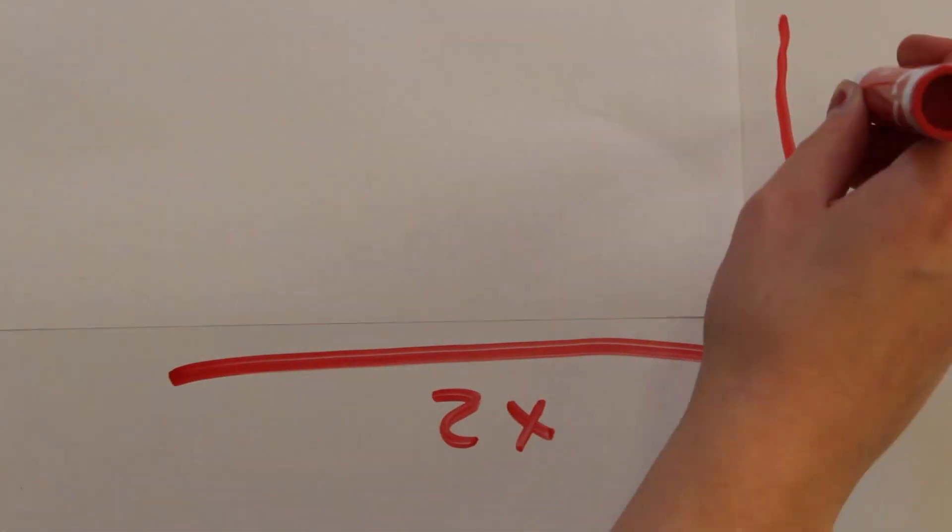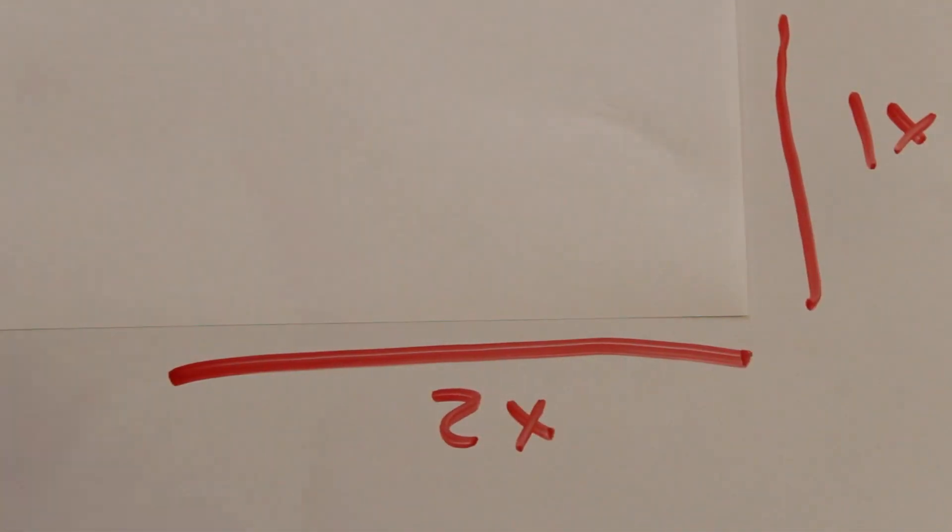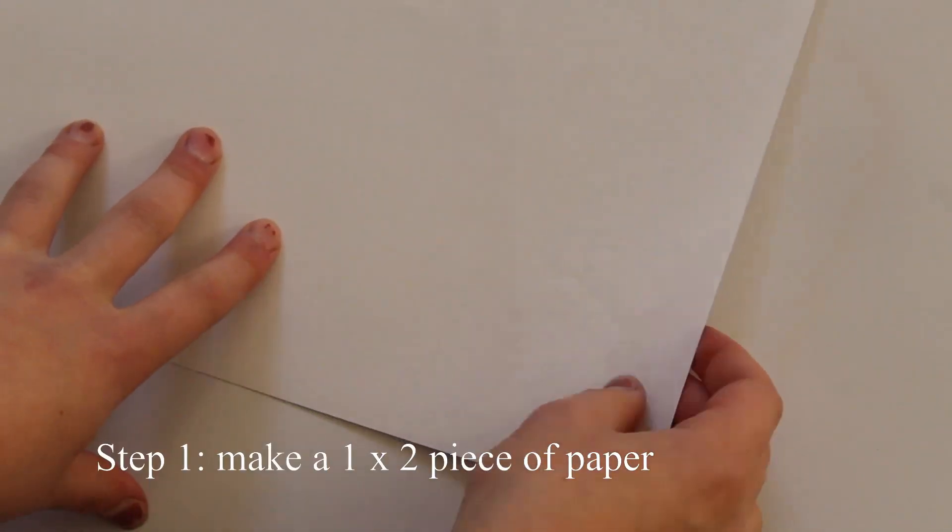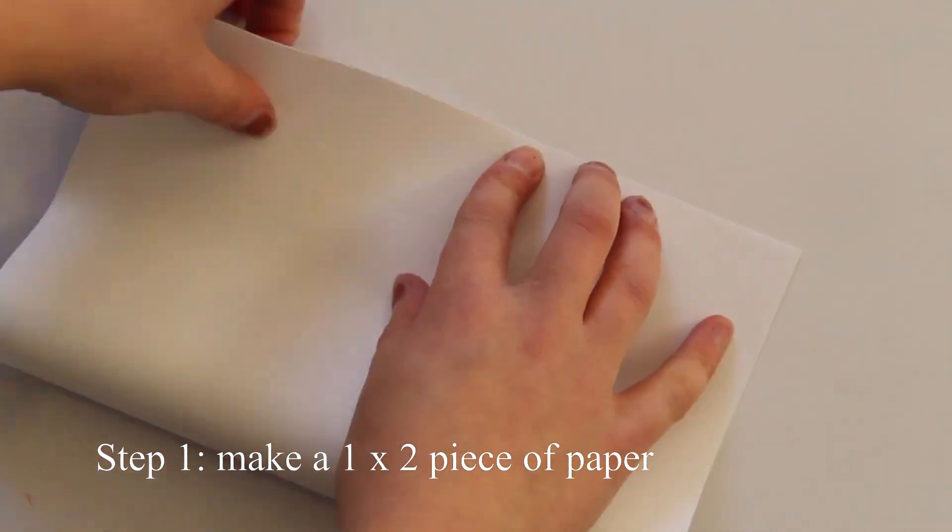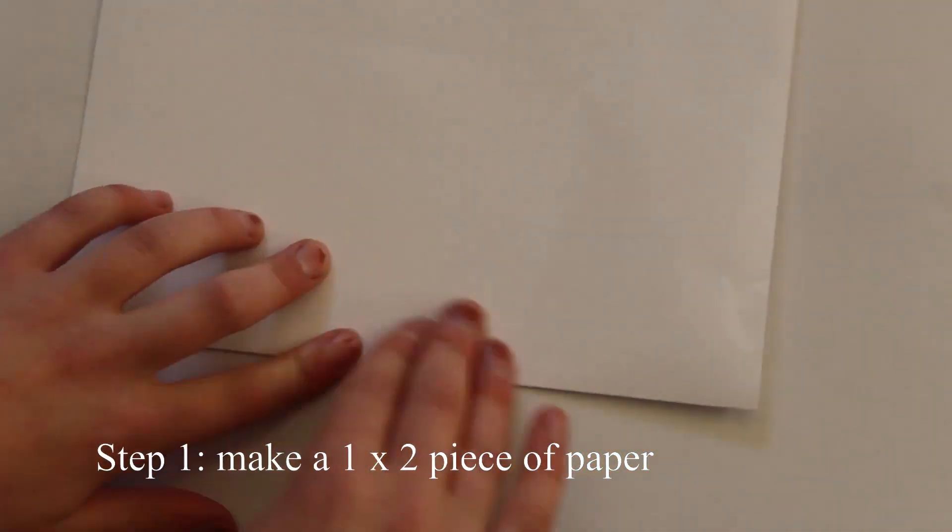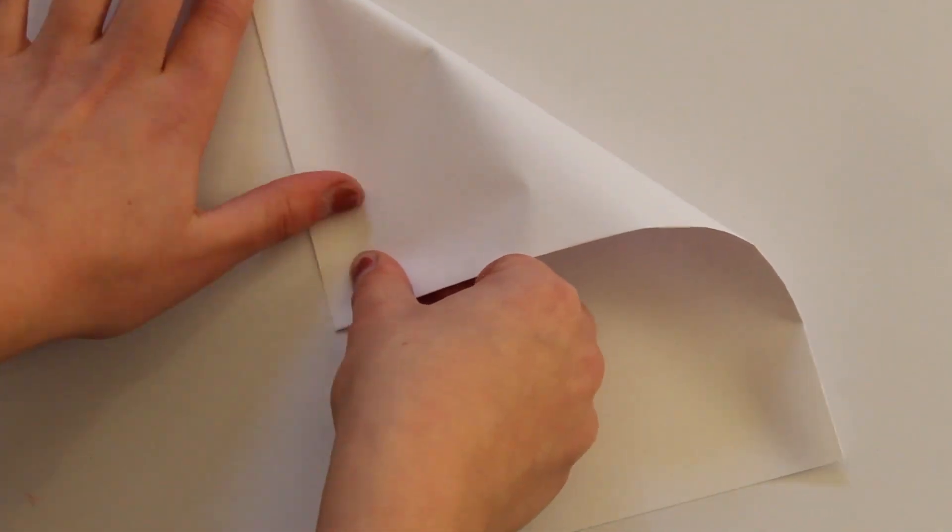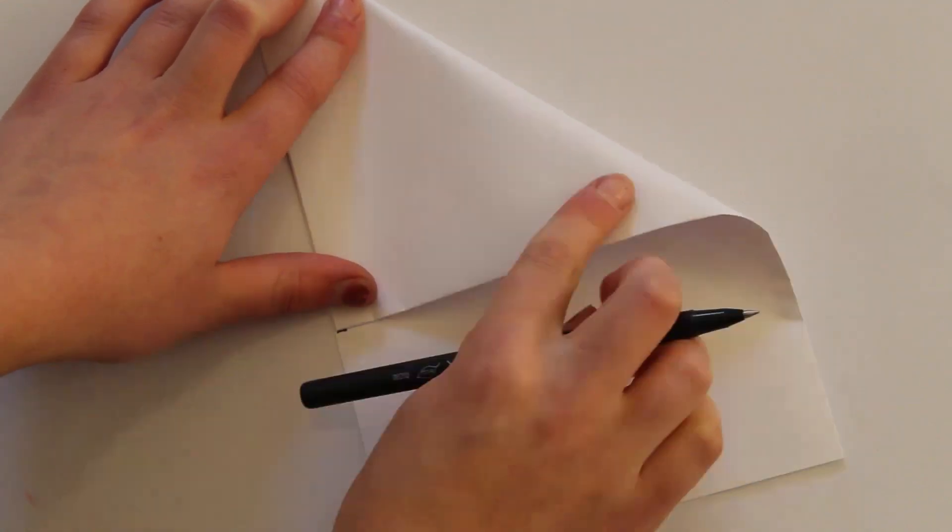First off, we need to make our paper proportionally one by two. You can use any method you want to do this, including measuring with a ruler. But I like to fold the paper in half and then make a square, so that when I unfold it, the two squares together have the correct proportions.